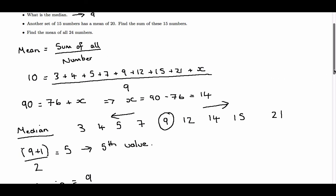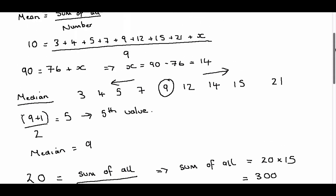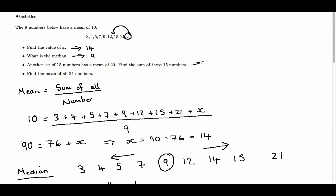So we know we have a mean of 20, and that is equal to the sum of all of them divided by the number of them there, and the number of them there is 15. So that tells us that the sum of all of them is equal to 20 times 15, which is 300. So we can say that the sum of these 15 numbers is 300.